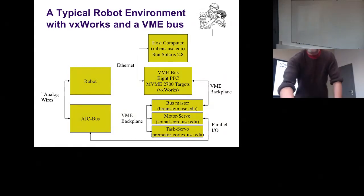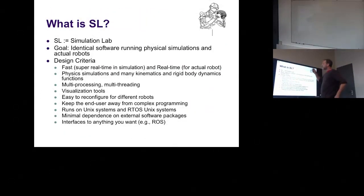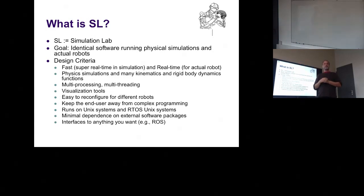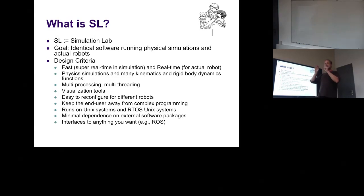SL was created to be a general software package which, when run in simulation mode, mimics the architecture of VxWorks with multiple processes. It has a graphics interface, and instead of a real robot it communicates to a physical simulation. When you want to use it on a real robot, it interacts with VxWorks in the normal pathway, replacing the simulation with the real robot in an invisible way. But otherwise, from the end user's point of view, the software looks exactly the same.